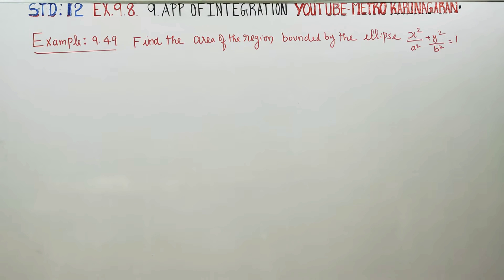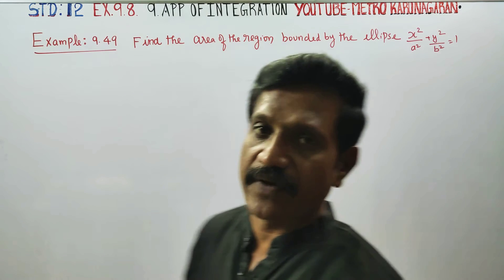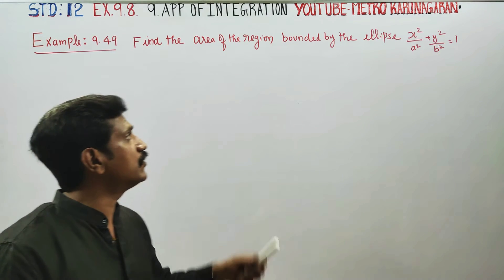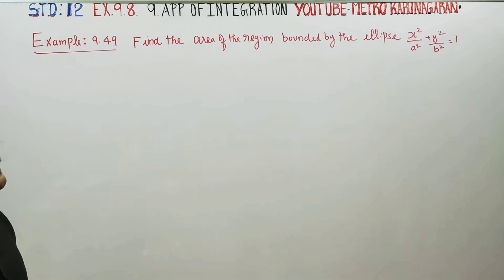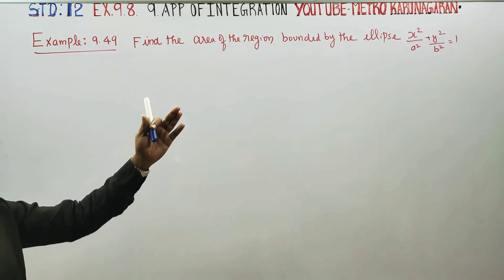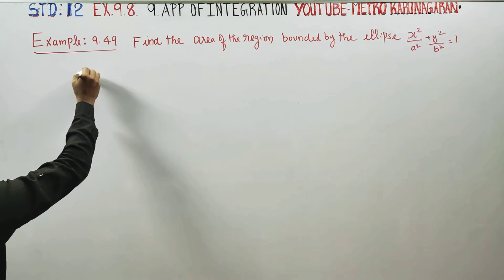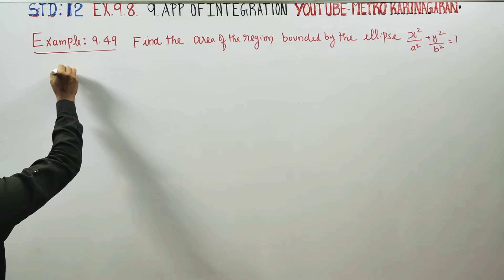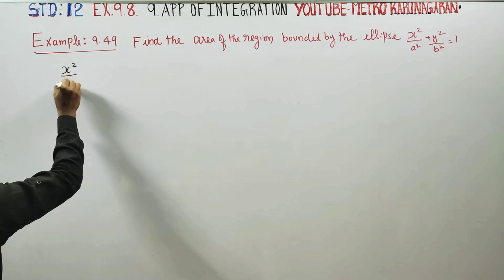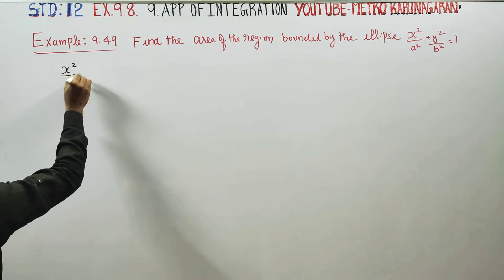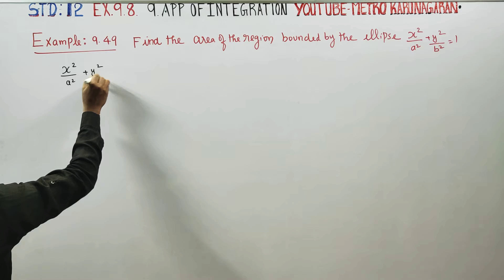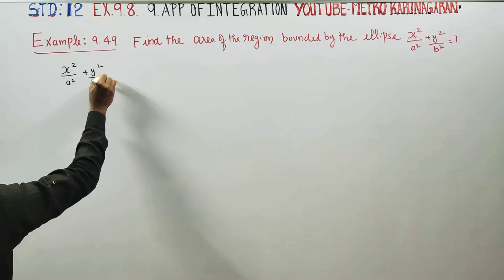Dear 12th standard students, I am Atro Karanagaran. In example 9.49, find the area of the ellipse x²/a² + y²/b² = 1. The ellipse equation is x²/a² + y²/b² = 1.